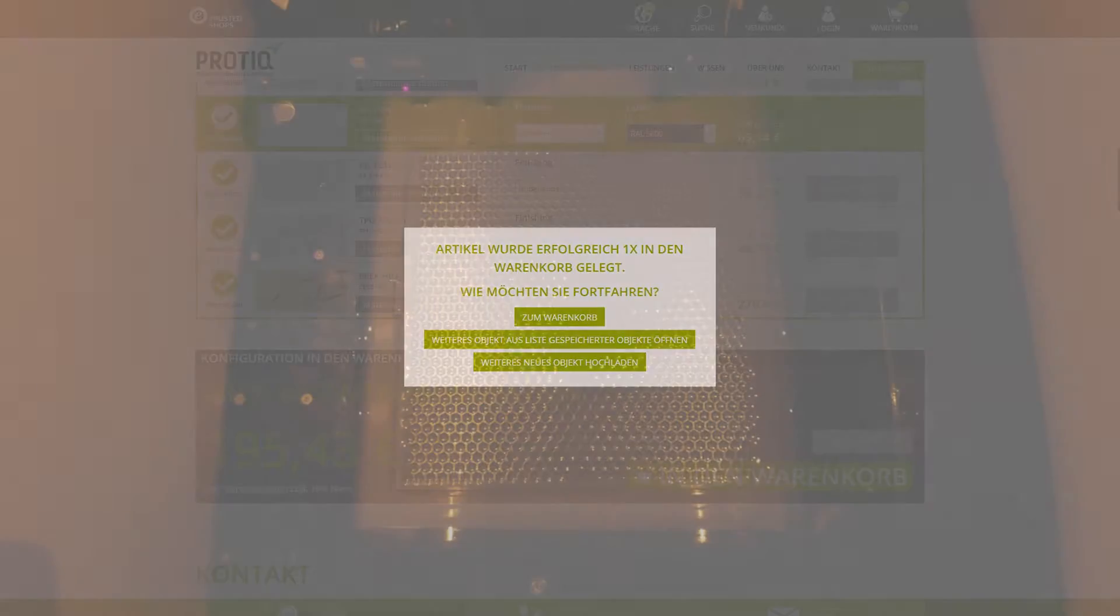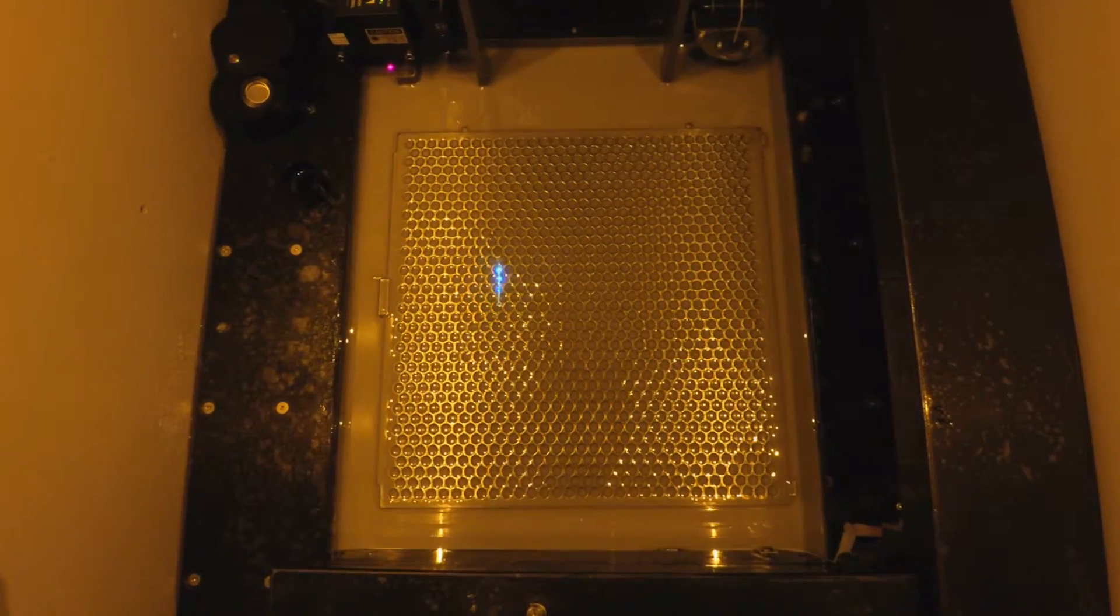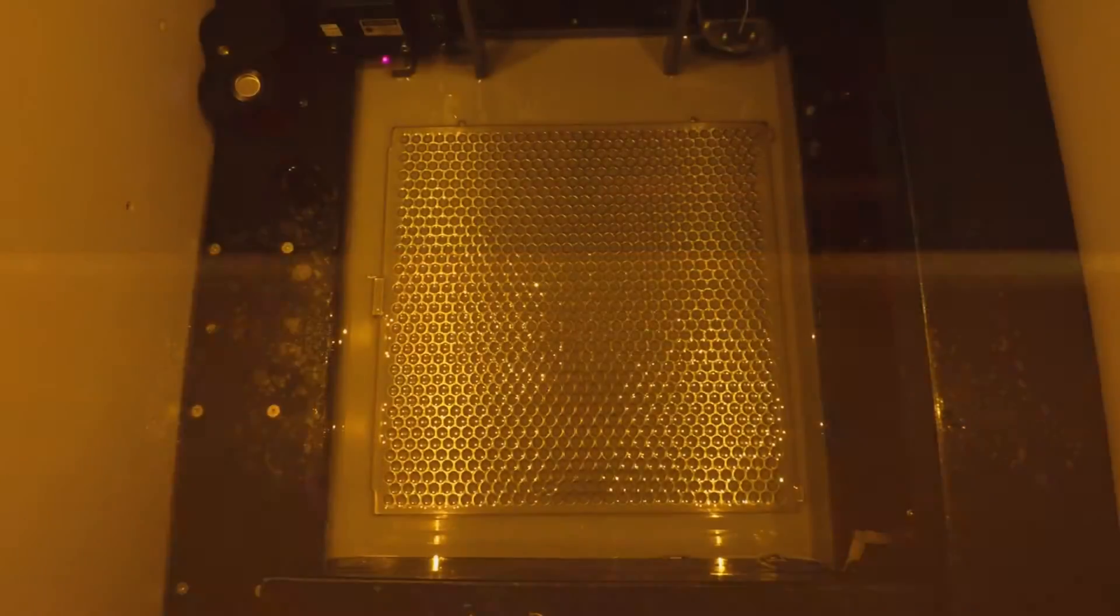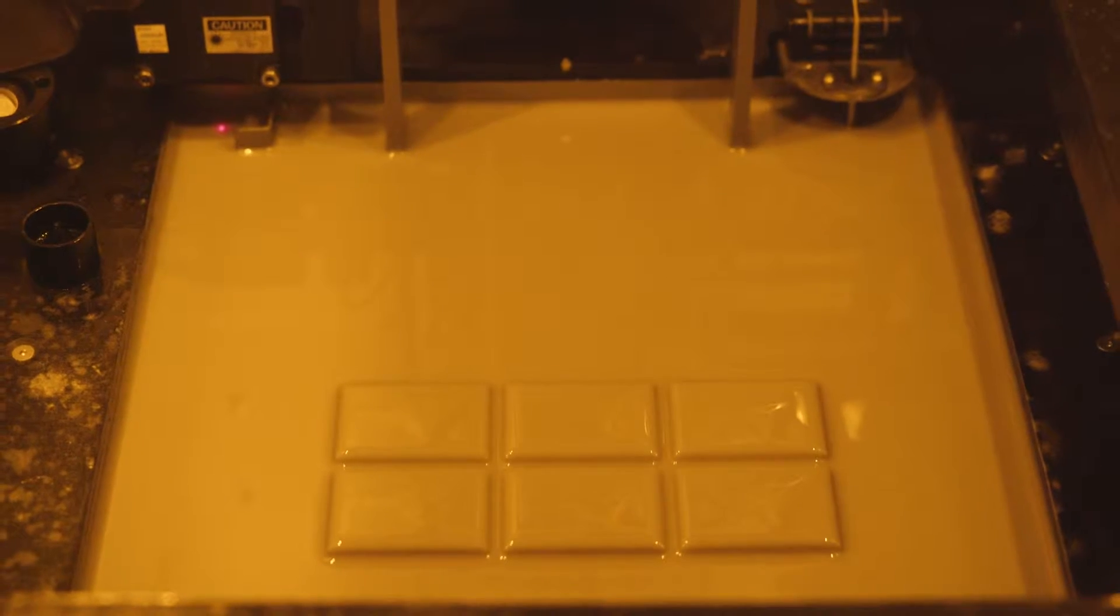The work platform is coated with a thin layer of epoxy resin which is then hardened at the relevant positions by a UV laser. Then the work platform is lowered into the resin bath by one layer's thickness and the surface receives a new coating. The process is repeated until your object is completely finished.